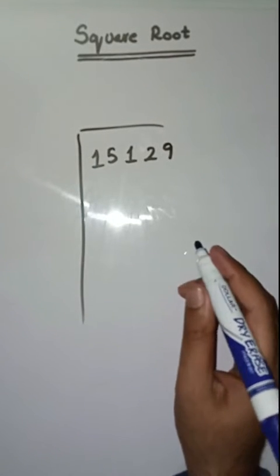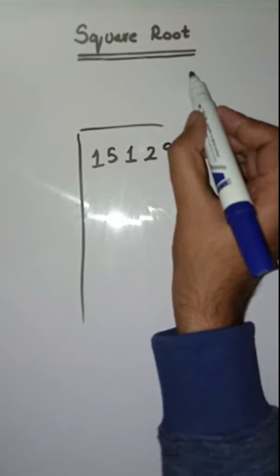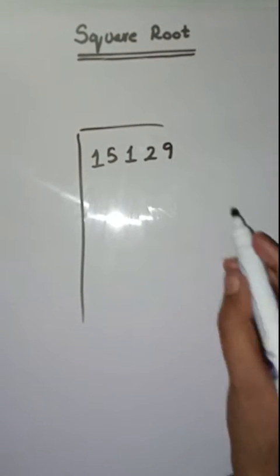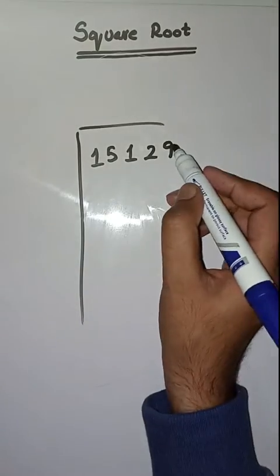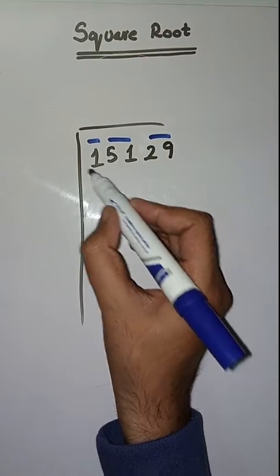Hello students, hope you all are fine. Welcome to my channel. Today we will learn how to find square root. We have to find square root of 15,129. So first step is we have to make pairs from right to left like this: 29, 51, and 1.